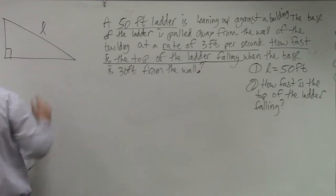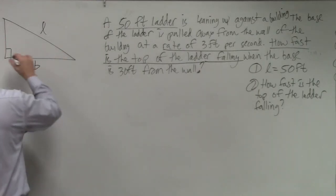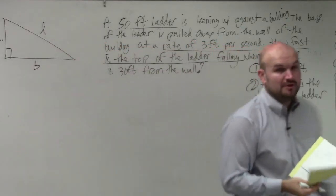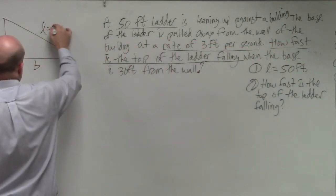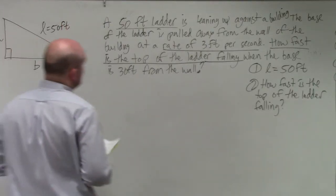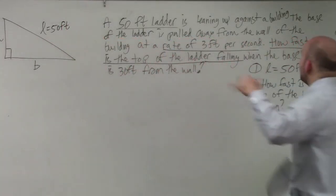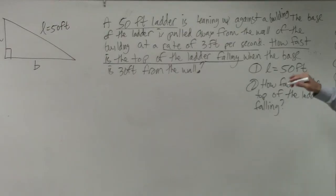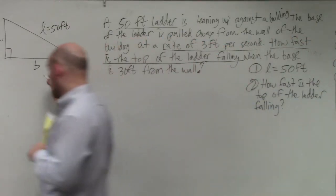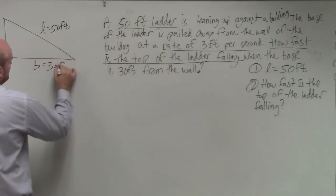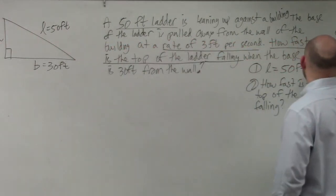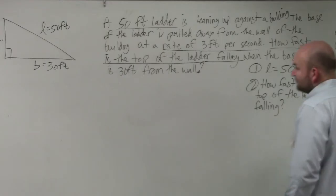So if we say here's our ladder, here's our base, and here's our height. We know that the ladder is equal to 50. They're asking how fast is the top of the ladder falling when the base is 30 feet from the wall, so we can also say the base equals 30 feet.